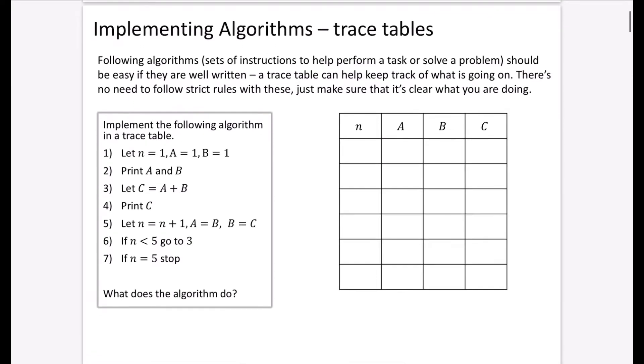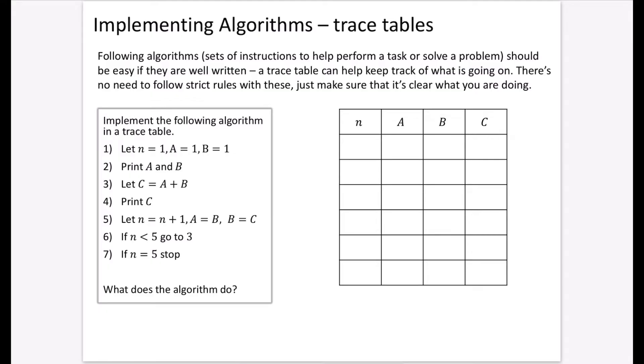We're going to start by thinking about what an algorithm actually is and how we implement it using something called a trace table. Algorithms are sets of instructions to help perform a task or solve a problem—they should be easy if well written. A trace table can help keep track of what's going on. There's no need to follow strict rules with these; just make sure it's clear what you're doing. I've looked through all the exam questions and examiner's reports, so everything I tell you is the best advice to save you time and make it easier to understand.